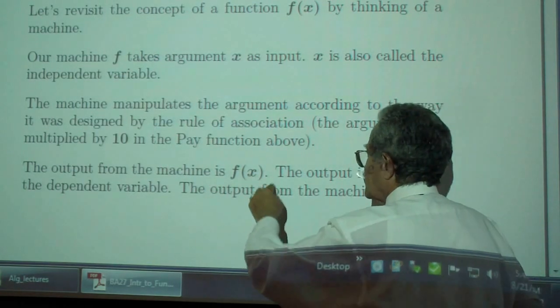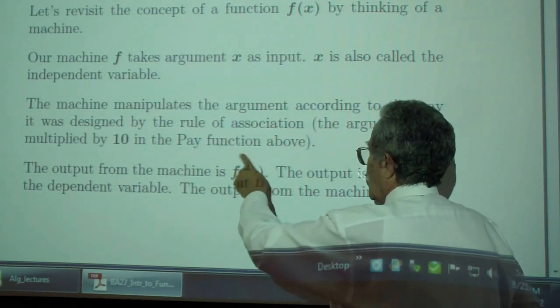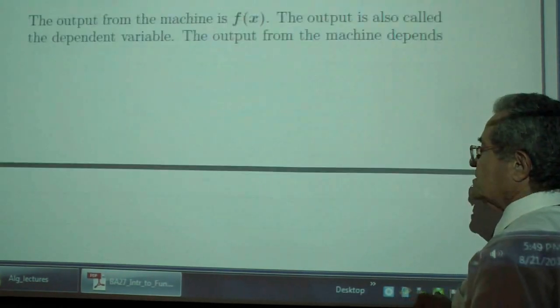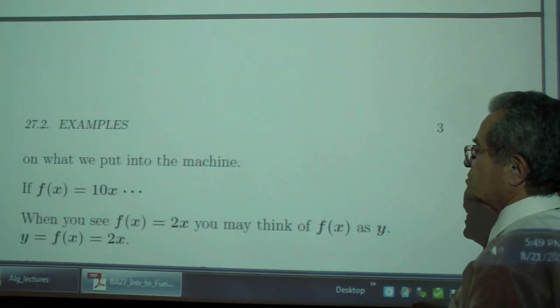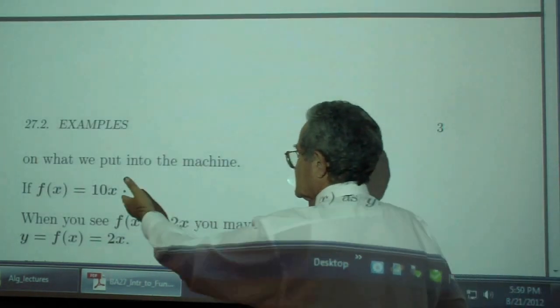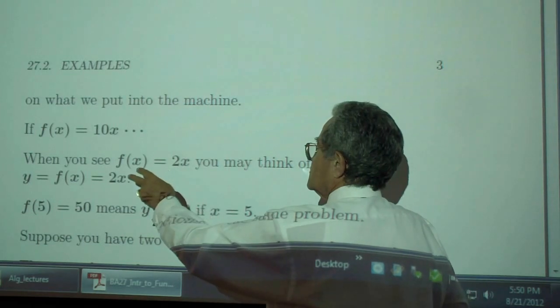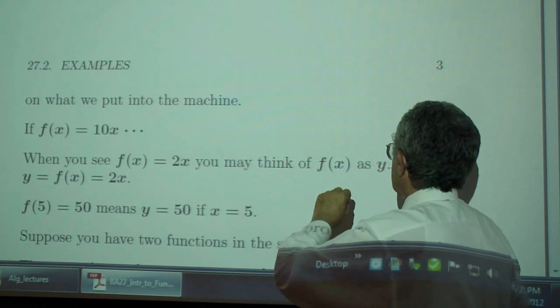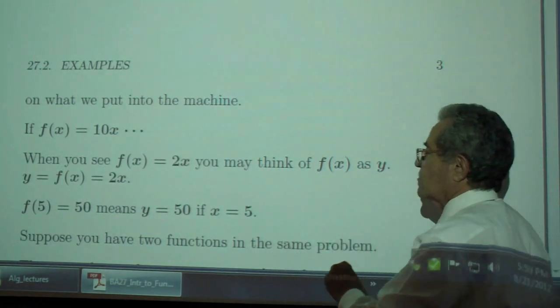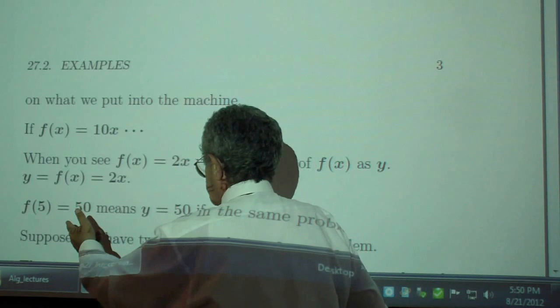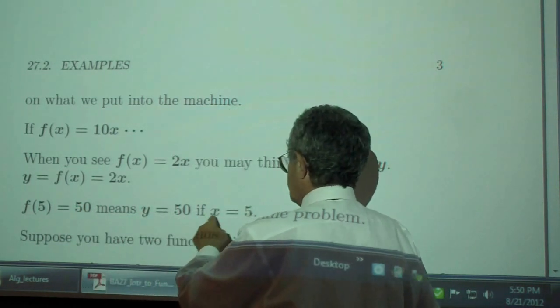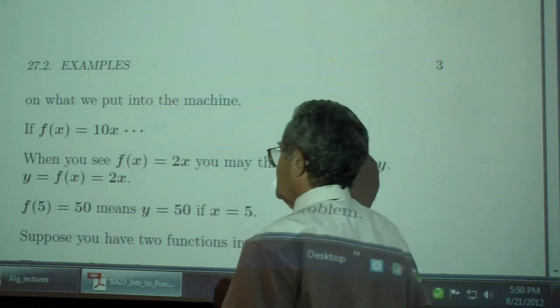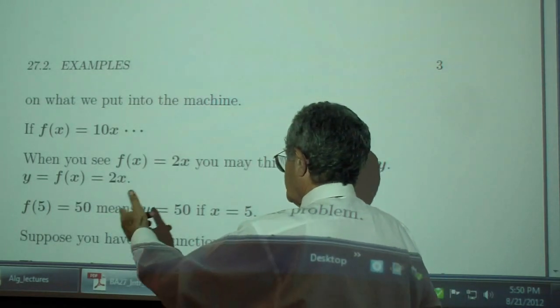Y is F of X. Y is the symbol for F of X. All of this can be replaced by Y. The output from the machine depends on what you put into the machine. F of X is 10X. When you see F of X is 2X, you may think of F of X as Y. Y is 2X. F of 5 is 50 means that Y is 50 when X is 5 and the machine multiplies 5 by 10.